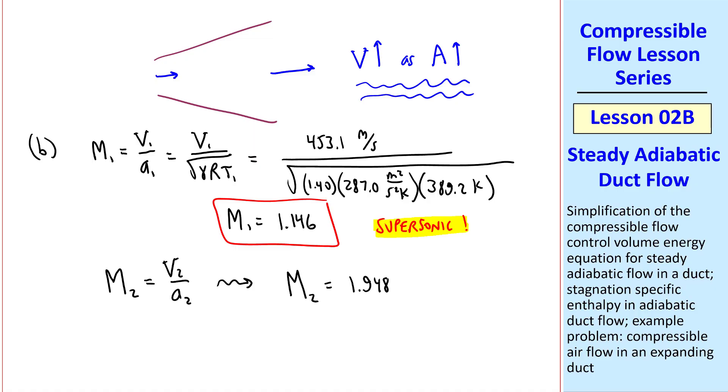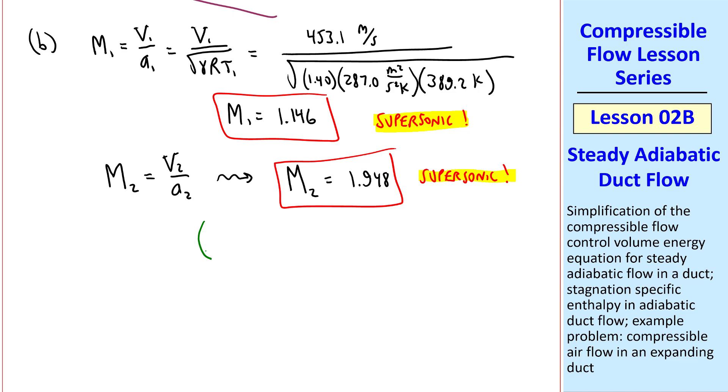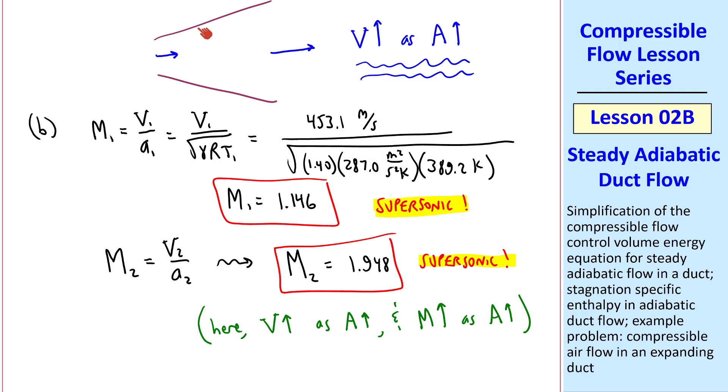you get M2 is 1.948, which is also supersonic. And as a final comment, here not only does V go up as the area increases, but also Mach number goes up as area goes up. Mach number increases in a supersonic expanding duct.